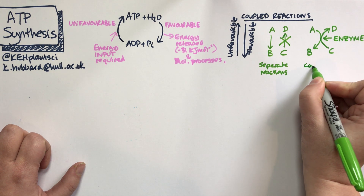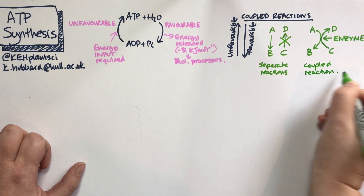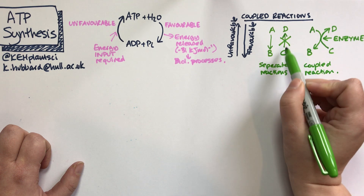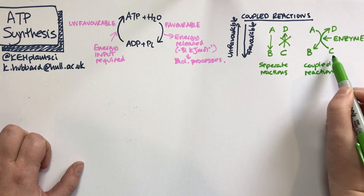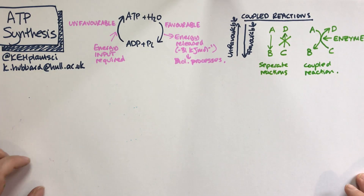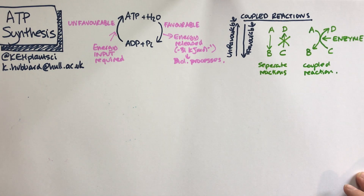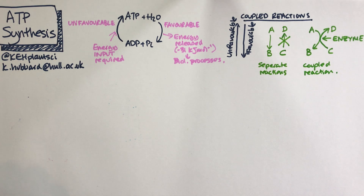In a coupled reaction, both processes are able to happen. Separately, C to D wouldn't work, but if you couple it together and use the energy from A to B to power C to D, then you can have a biologically important process happening. ATP synthesis is all about these coupled reactions, but it gets a little bit complicated because quite a few proteins are involved, so I'm going to build this up slowly but surely.